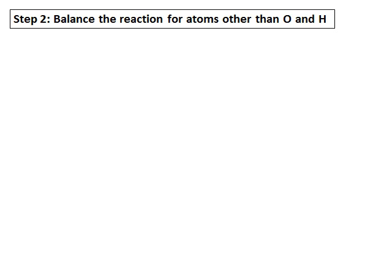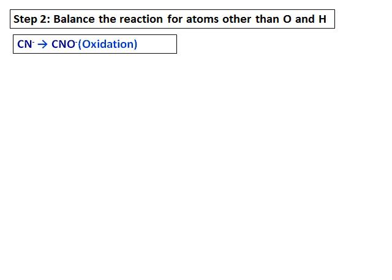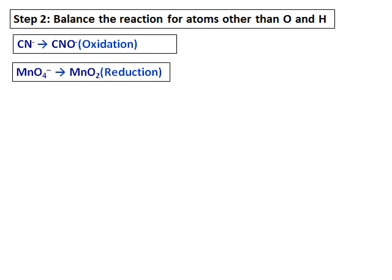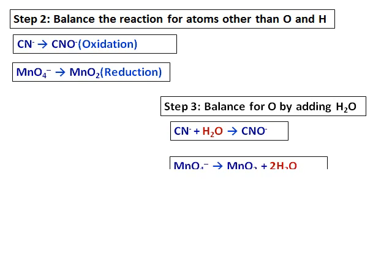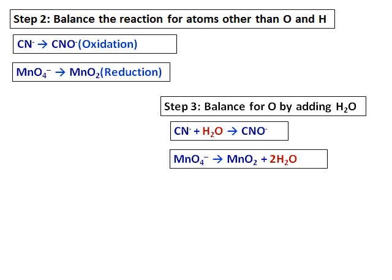Step 2 is to balance the reaction for atoms other than oxygen and hydrogen. So, in this case, C and N are already balanced, so we don't add anything. Even with the manganese, nothing has to be added because the manganese is already balanced. Step 3 is, I will balance the oxygen by adding water. And so, I added one molecule of water in the first half reaction and added two molecules of water in the second half reaction.